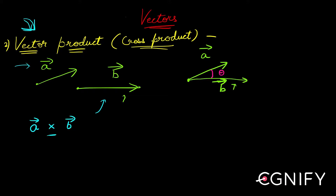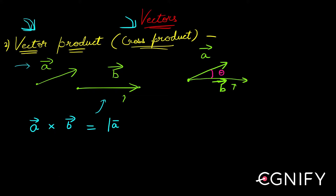This is why it's called cross product — because we denote it with a cross in the middle. The expression is very similar to dot product: we take the magnitude of a, the magnitude of b, but we take the sine of the angle between them instead of the cosine. So in scalar product we took cos theta; here we take sin theta. But it is not yet over.